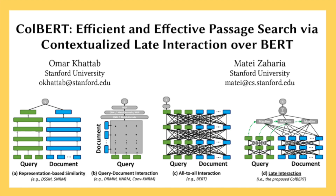ColBERT uses a single BERT model for both query and document encoding. It distinguishes between queries and documents by prepending special tokens: Q for queries and D for documents. The encoders also employ a linear layer to control the embedding dimension and normalization to ensure unit L2 norm for each embedding.